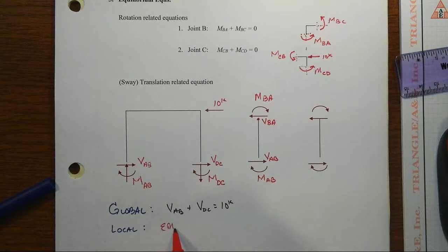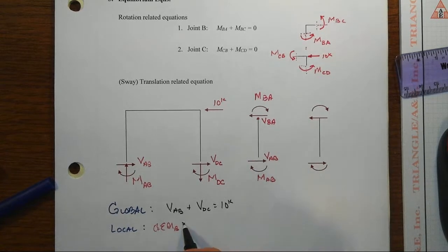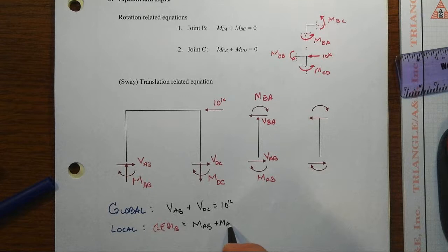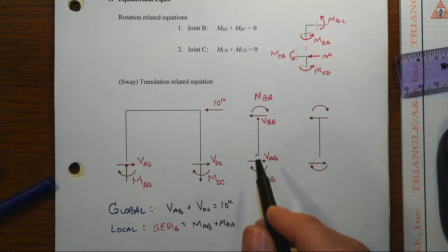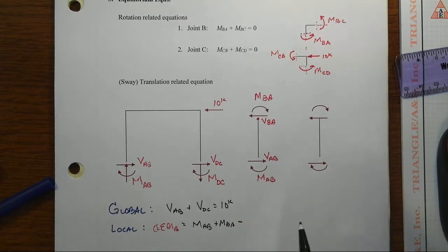Notice that if we were to sum moments about the top and let's take clockwise as positive, then we would get, I'm going to just go ahead and write this one out: we get MAB plus MBA, the two end moments then have to be equilibrated by VAB times that column length.